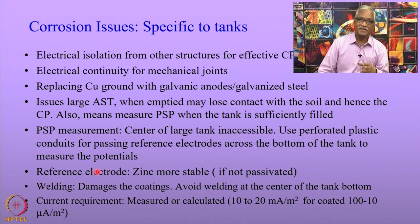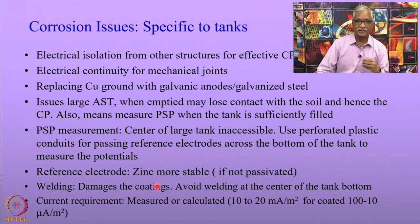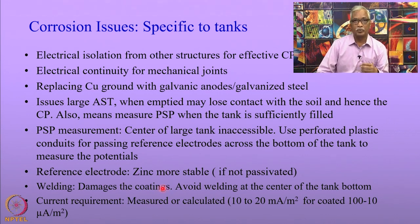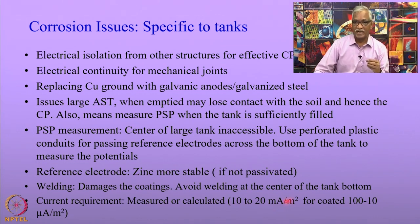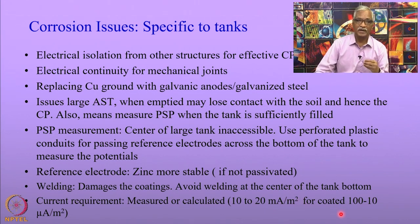Similar to pipelines, the current requirements for cathodic protection of storage tanks can either be measured or calculated. Generally, the current requirement lies in the range of 10 to 20 milliamperes per meter square for bare tanks. For coated tanks, the current can be significantly reduced to 100 to 10 microamperes per meter square.